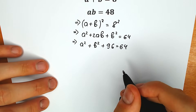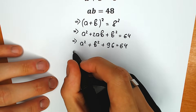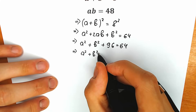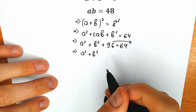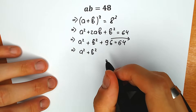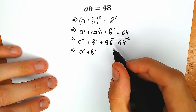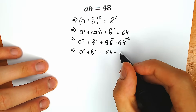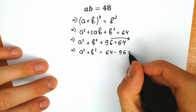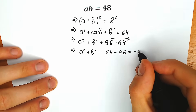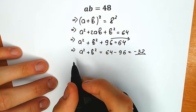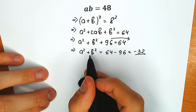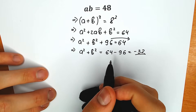And right now the great and tricky moment, because it helps us a lot. From here our a squared plus b squared — moving 96 to the right side — a squared plus b squared equals 64 minus 96, which equals minus 32.